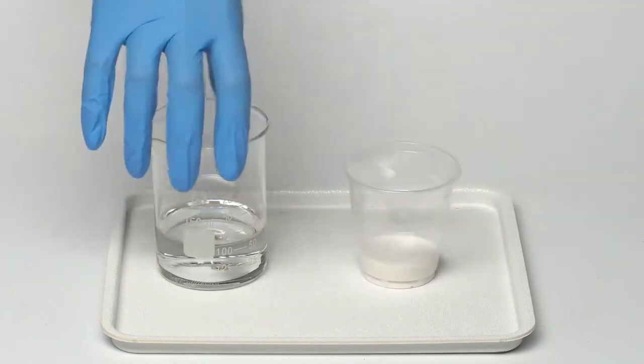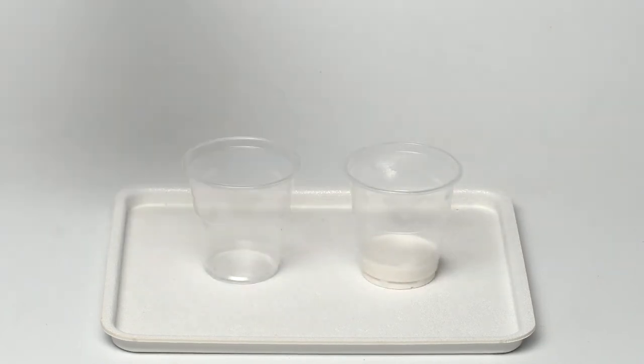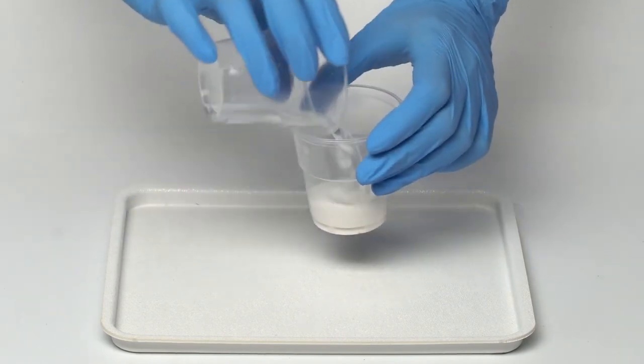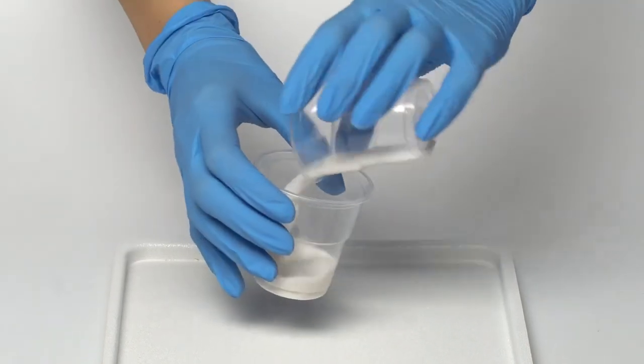Pour the solution of liquid glass into the second cup. Now pour the liquid back and forth from one cup to the other until the mixture solidifies.